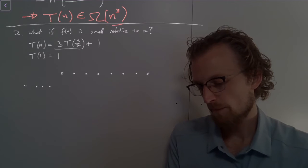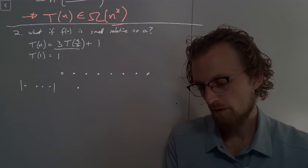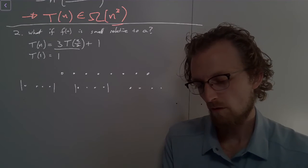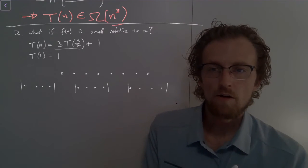At our second level of recursion, we have three size four arrays. One, two, three, four. And then one, two, three, four. One, two, three, four.